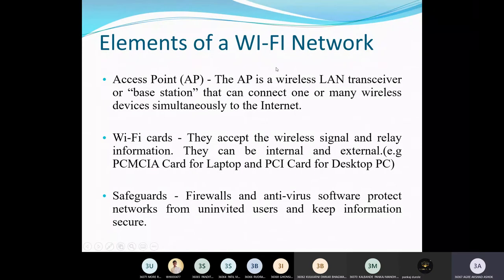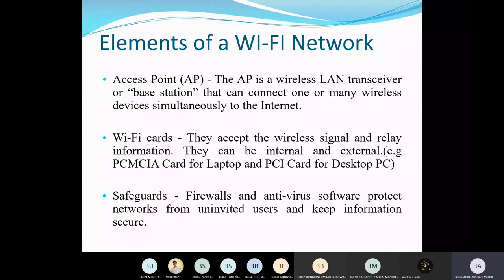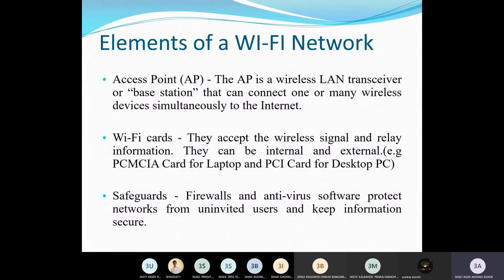Every technology has its own elements. There are three main elements for a Wi-Fi network. The first is the access point, known as AP — a wireless LAN transceiver or base station. Just like how a mobile phone matches a frequency with a radio station — for example, 93.5 FM — if the frequency of the mobile and the base station match, the connection is successfully made. That collecting point is the access point, which can operate in terms of both wireless and LAN.